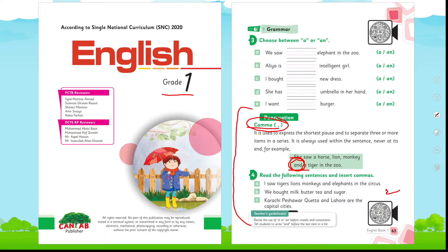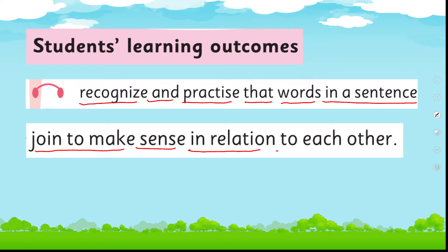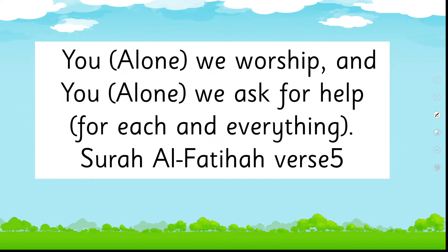In that lesson on use of comma, we learned to use 'and' as well. Now we are going to learn further — to recognize and practice that words in a sentence join to make sense in relation to each other. This is our today's SLO. Let's start with the name of Allah.